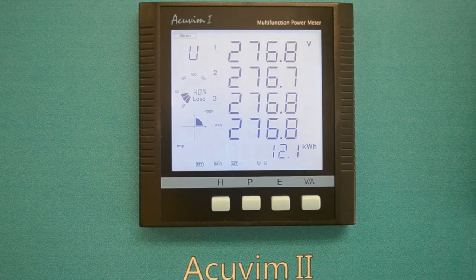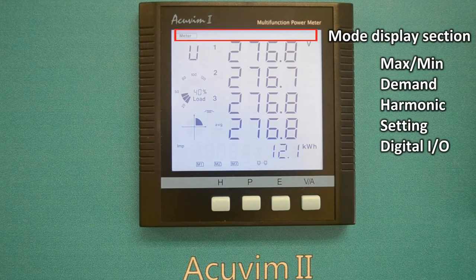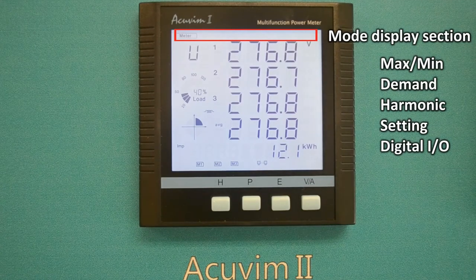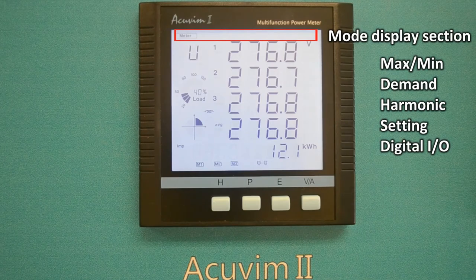On top of the meter icon, there are additional icons indicating other modes including MaxMin, Demand, Harmonic, Setting, and Digital I.O. We will cover these in a few moments as well.